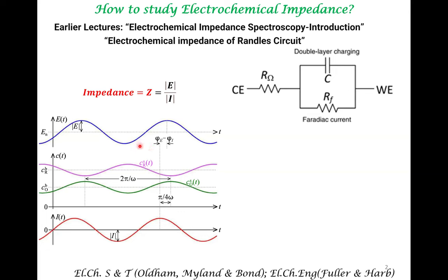This is a general way of thinking about electrochemical impedance spectroscopy. What we are interested in is: as a function of this perturbation — the variation of potential at a particular frequency — what is the current response? This is a general way of studying any system: you make a small perturbation and then measure its response. Because this is an electrochemical system, the perturbation is in the form of potential variation and the response is in the form of current variation.